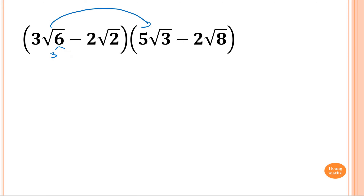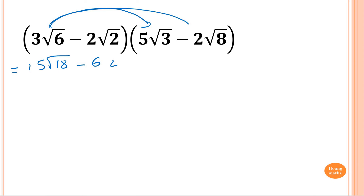Expanding them together: 3 times 5 is 15, and 6 times 3 is 18. Then this times that: minus 6. And 6 times 8 is 48, so square root of 48. Then minus 2 times 5 is minus 10, and 2 times 3 is 6, so square root of 6.